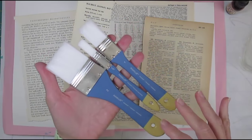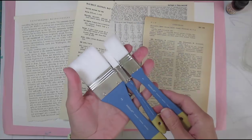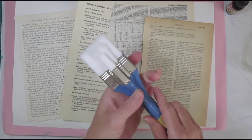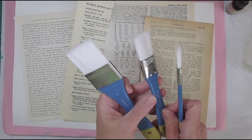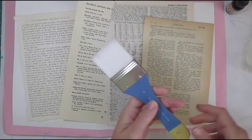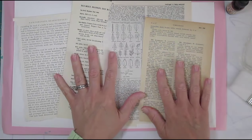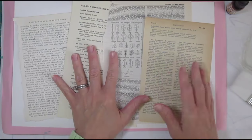They are Artist Loft from Michaels, and they come in a set of six brushes, so you get two of each of these sizes. I love this size. It's my favorite size, but I'm going to use the larger one, putting some Mod Podge over this book paper.